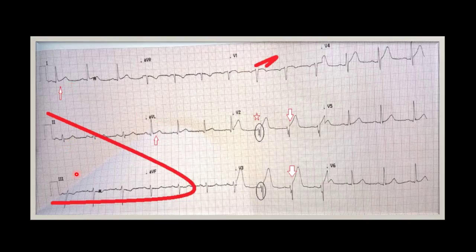Let's look at leads 2, 3, and AVF. Can you notice that there is subtle ST segment depression? More prominently in lead 3 and AVF than in lead 2, and this is most likely reciprocal changes coming from the anteroseptal leads, which we're going to have a look at now.